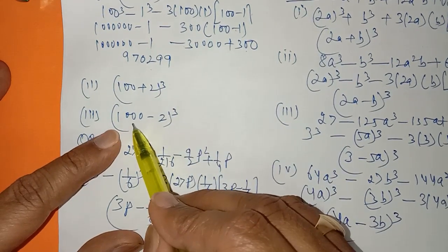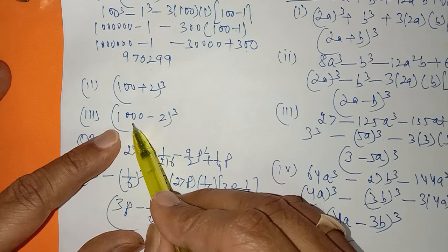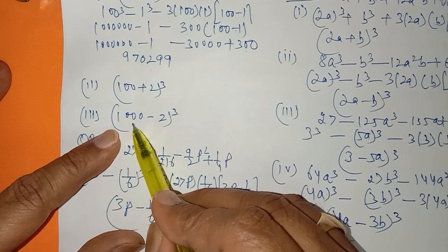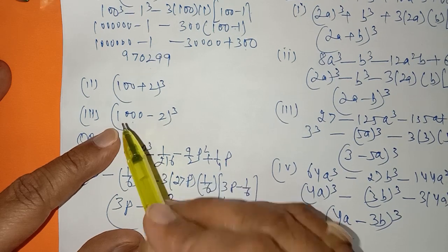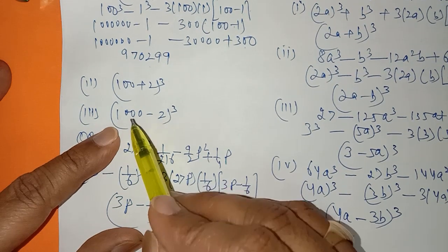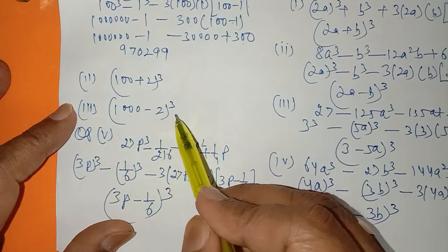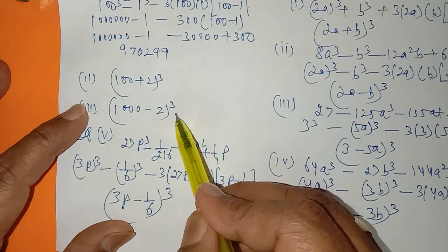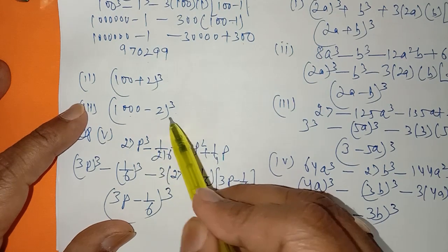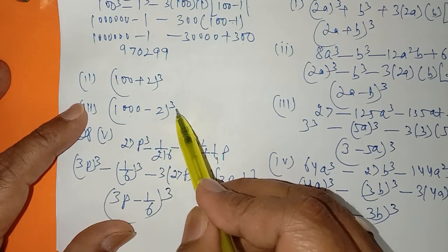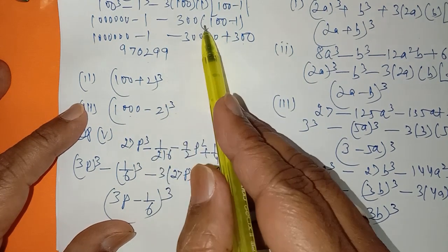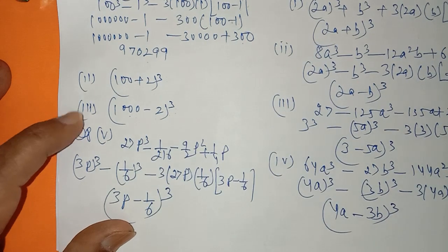Similarly, in the second part, to find 102 whole cube, write it as (100 plus 2) whole cube. In the third part, for 9998 whole cube, write it as (1000 minus 2) whole cube, and find the answer using the same identity.